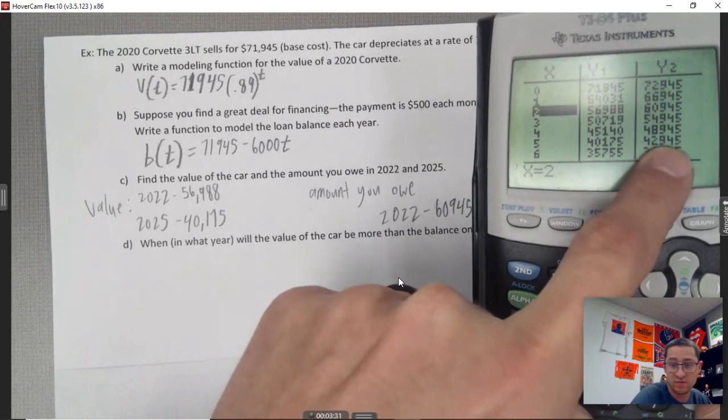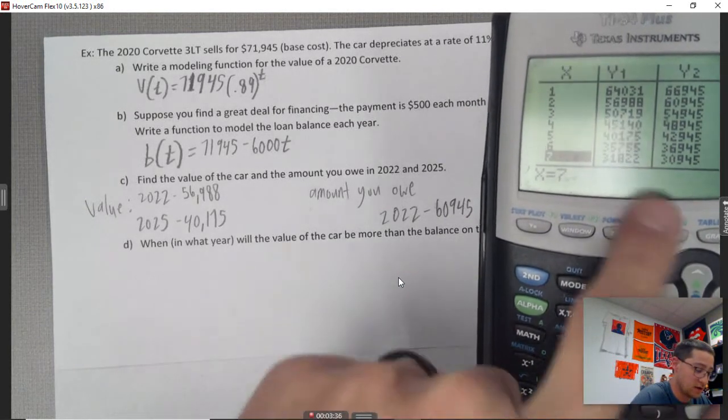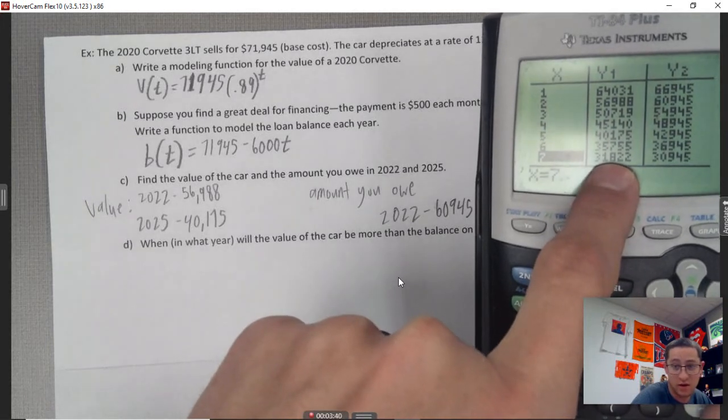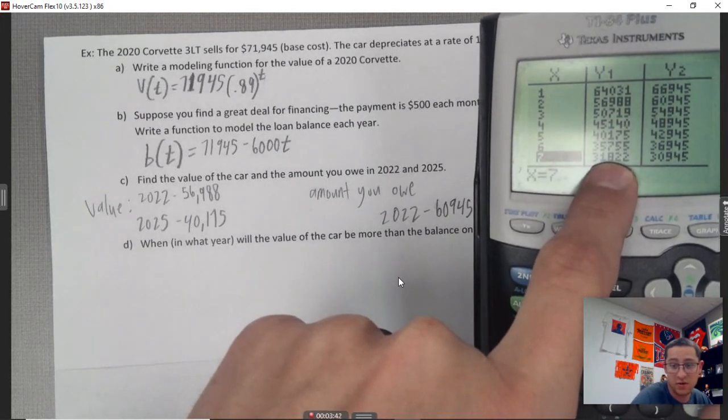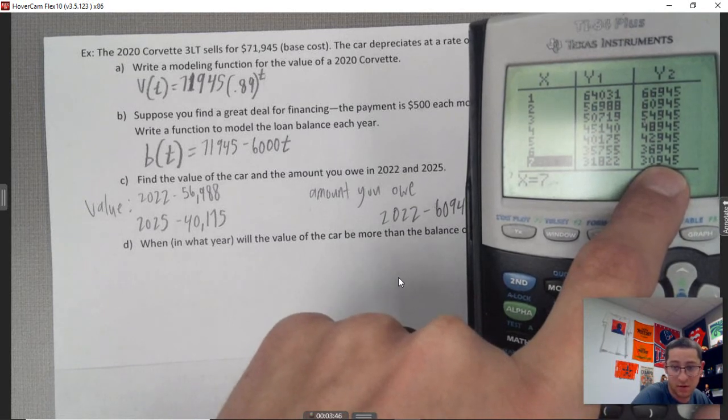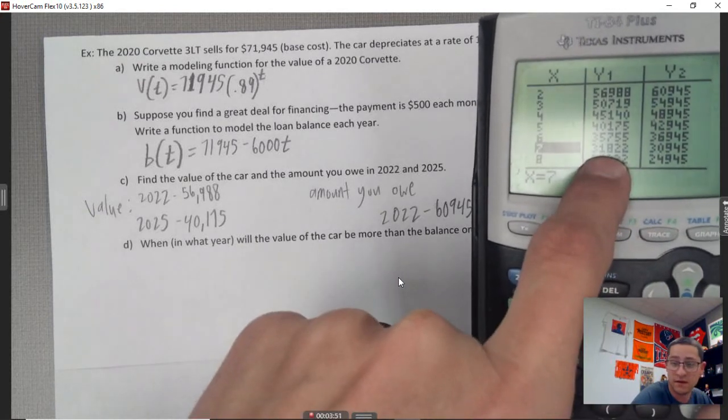And then just scrolling down here, right, in year seven the value of the car is $31,822, but then you have that much left to pay still. So if you're going to end up paying this, right, might as well sell it here.